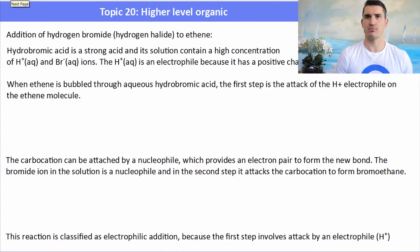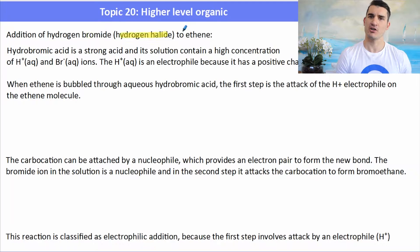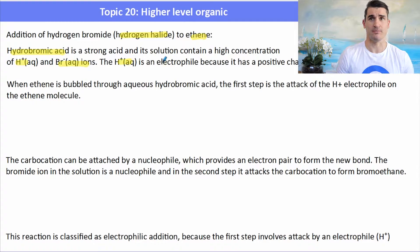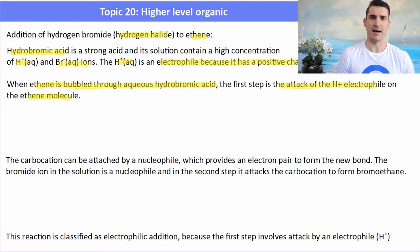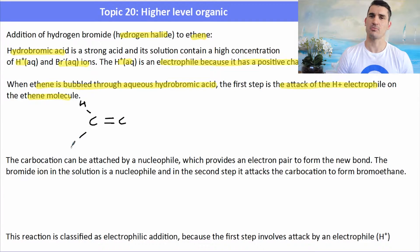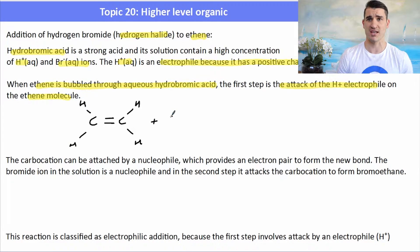Here's an example where we have hydrogen bromide, HBr, and we add that to ethene. HBr is a strong acid so it contains a high concentration of H⁺ ions. The H⁺ ions can act as an electrophile. When ethene is bubbled through a solution of hydrobromic acid, the first stage is the attack of the H⁺ electrophile on the double bond of the ethene molecule. Here we have our ethene with its carbon-to-carbon double bond and four hydrogens, and we add in our HBr — but in this case we're just interested in the electrophile, the H⁺. That's the first stage of the reaction.